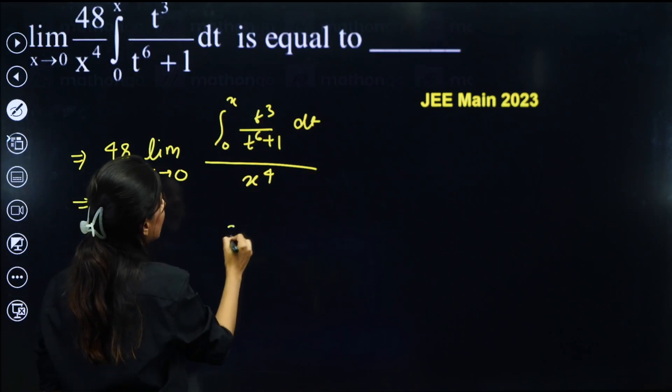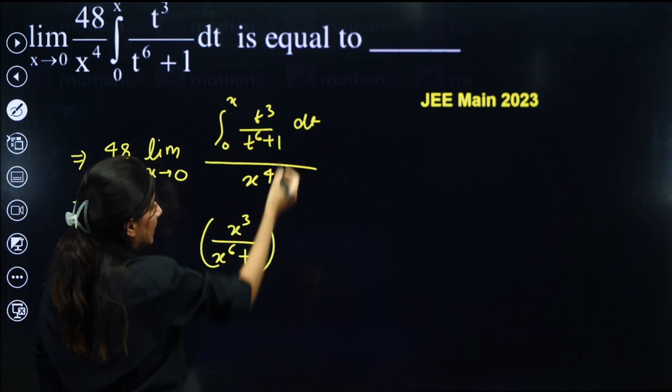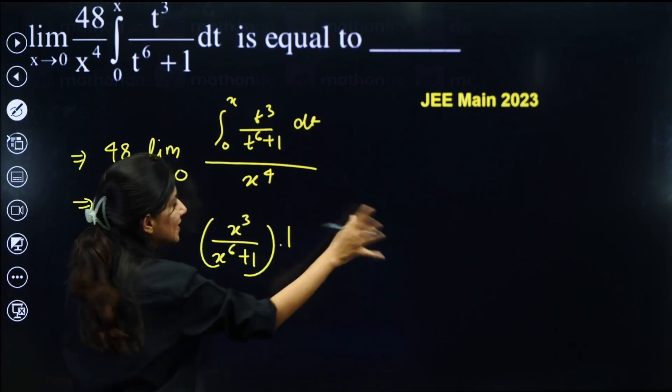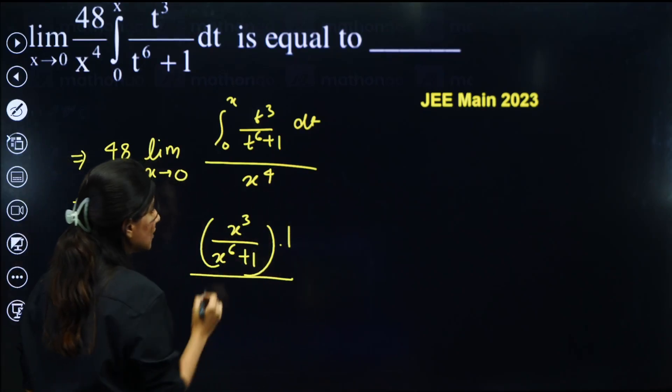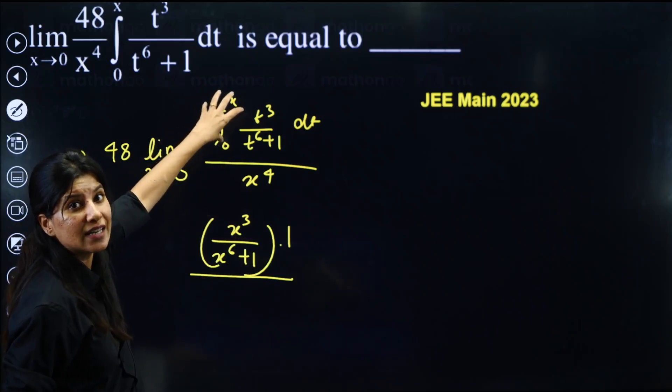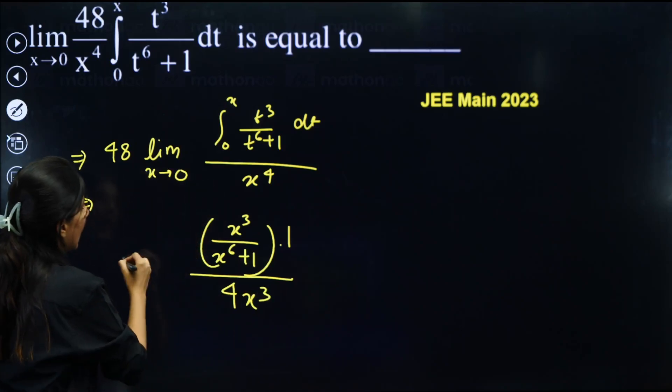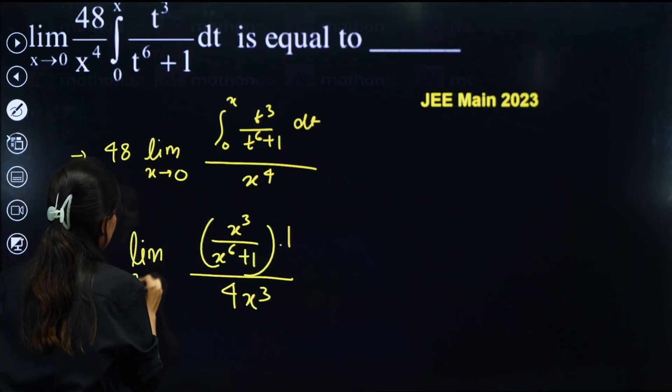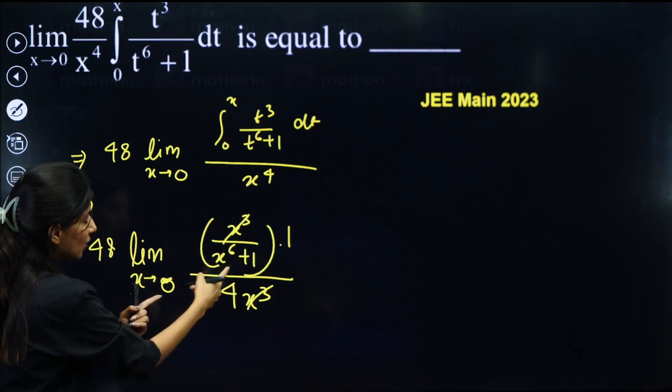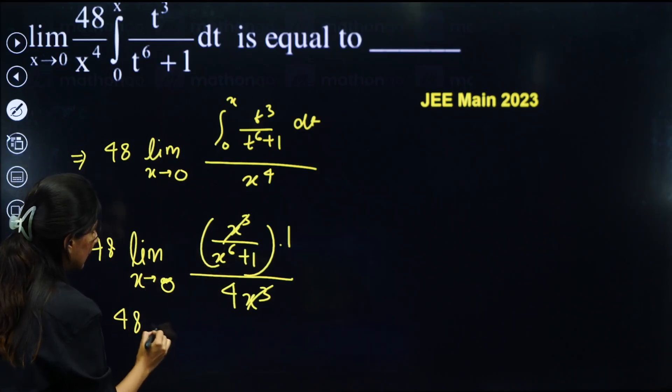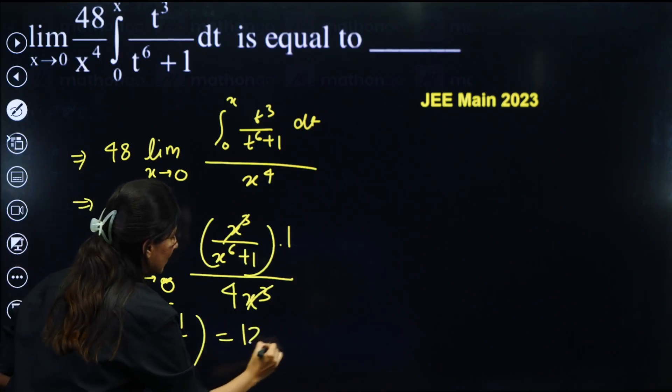So very easy. Just replace t by x: x^3/(x^6 + 1). Derivative of x is 1, minus 0 will be 0, because derivative of 0 will be 0, upon x^4 derivative, because L'Hopital. L'Hopital is derivative of numerator upon derivative of denominator, 4x^3. That's it. And limit x tends to 0 is there. Let's not forget the 48 as well. x^3·x^3 gone. x tends to 0 if you put, this is 48 and this is 1/4. So the answer will be 12.